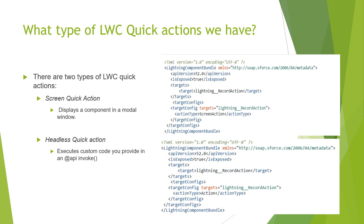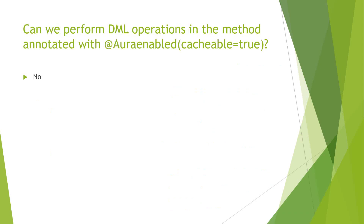Can we perform DML operations in a method annotated with @AuraEnabled(cacheable=true)? No, you cannot perform DML operations when your method is annotated with cacheable=true. We typically use this kind of method for getting records via a wire method in LWC components. It is used to cache results and provide better performance.